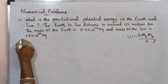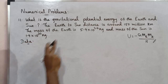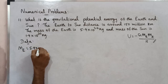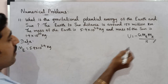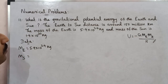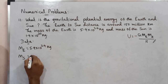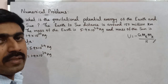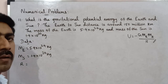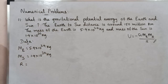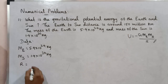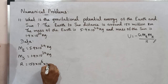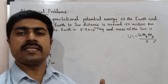First, data: mass of the Earth m is equal to 5.9 into 10 power 24 kg. The next, mass of the Sun M is equal to 1.9 into 10 power 30 kg. Then in between the distance r is equal to 150 million kilometer, which is 150 into 10 power 6 kilometer, and kilometer is 10 power 3 meters.